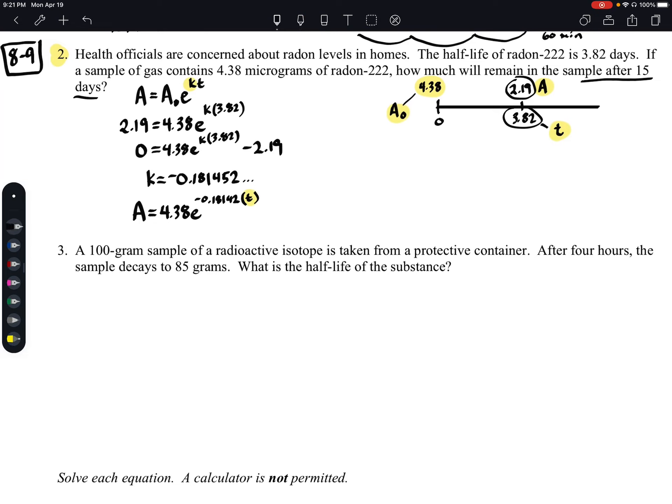Okay, so we'll say A is going to, or we'll say A of 15 is going to equal 4.38 times E raised to the power of negative 0.181452, I think I forgot my 5 in there, right, but you have it written down so you know, right, and then we're going to put in our 15.